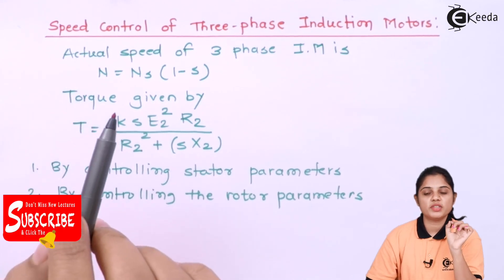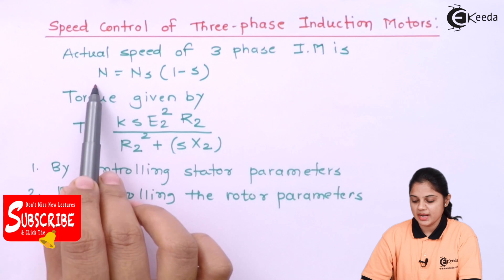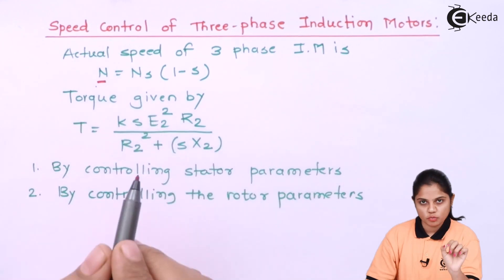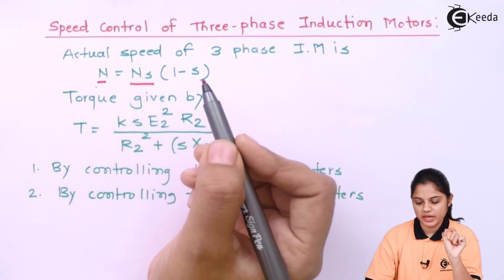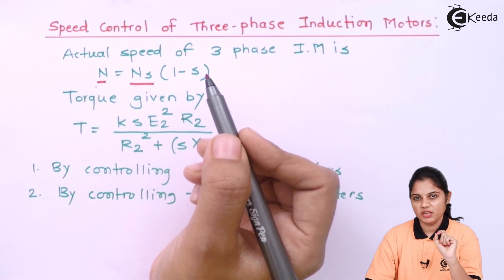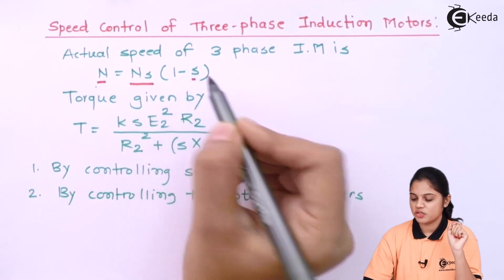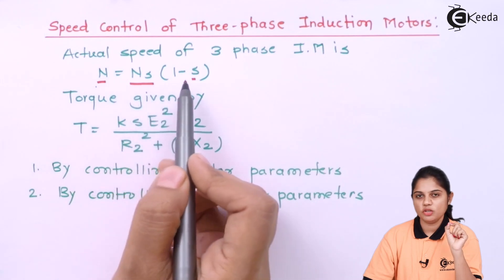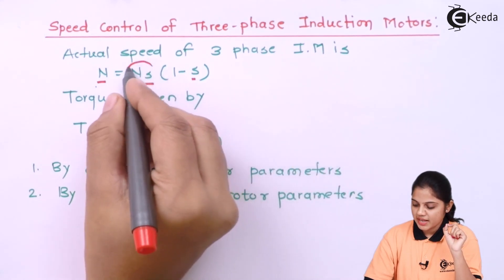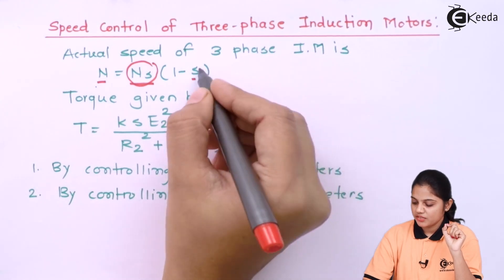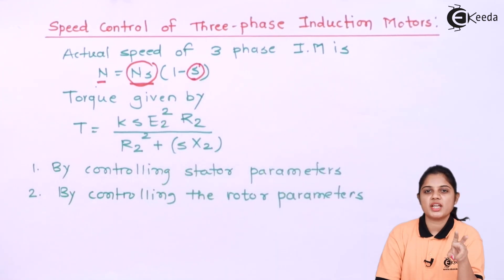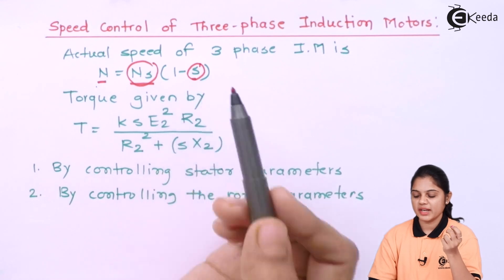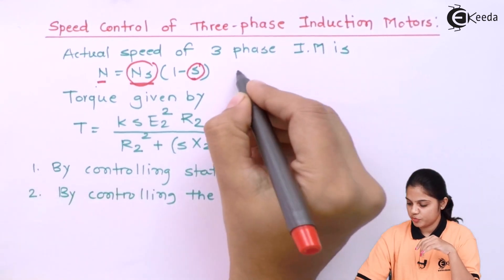The actual speed of the three-phase induction motor is given by: N = NS × (1 - S), where N is the speed of the motor, NS is the synchronous speed — that is 120F1 divided by P — which we have seen in a previous video, and S stands for slip. Now if you see the formula properly, either you can change NS, the synchronous speed, or you can change S, the slip, or you can change both parameters to change the speed of the motor. That is the first point to be noted.